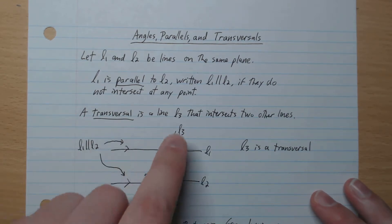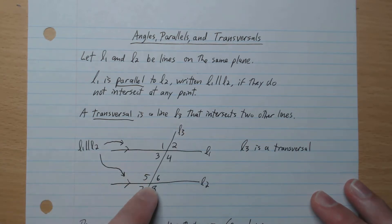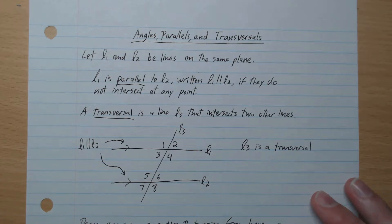A transversal is a line L3 that intersects two other lines. So here we have our L3 cutting our two other lines, and so L3 is a transversal.